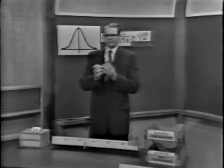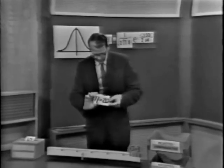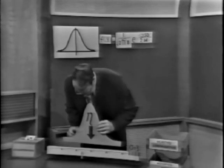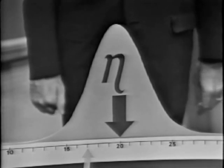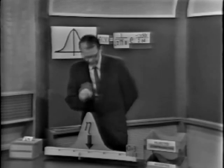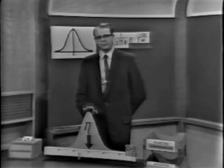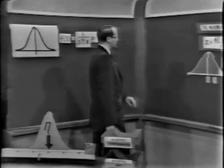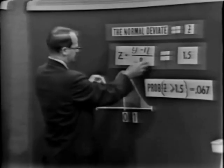Suppose someone comes up and says, 'I think the mean of this distribution is equal to 20.' What would we do? We would locate the distribution at 20. Then we determine the probability of the event given that eta is equal to 20, by evaluating the normal deviate appropriate to this particular problem.